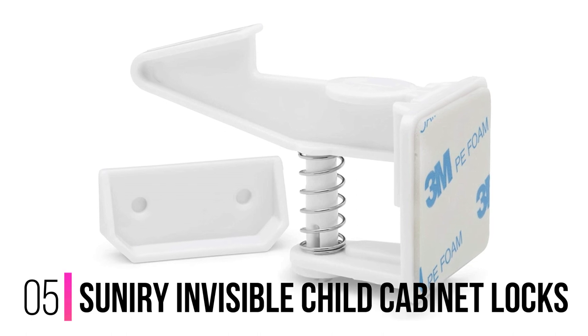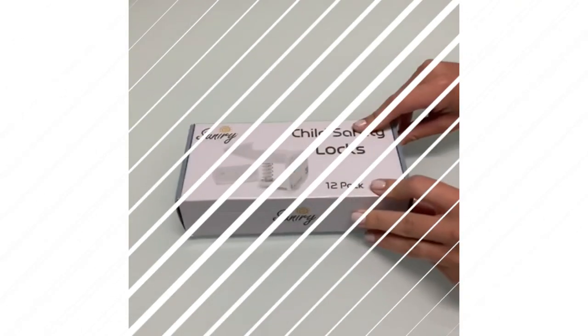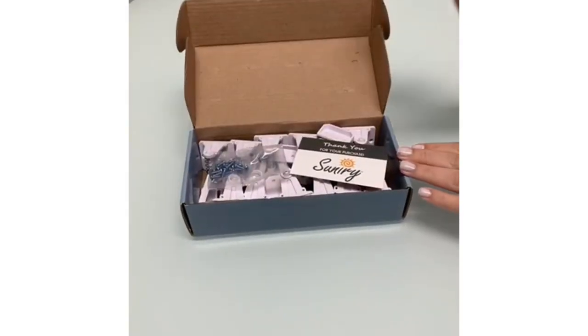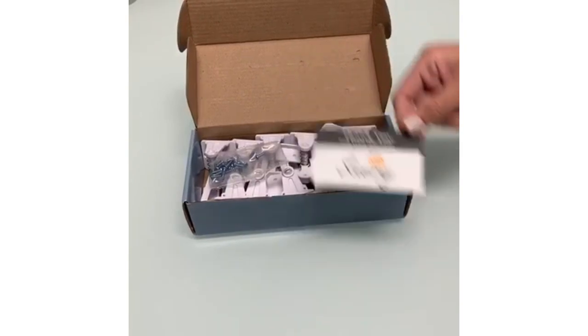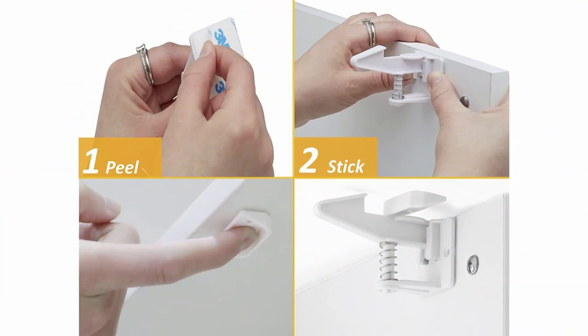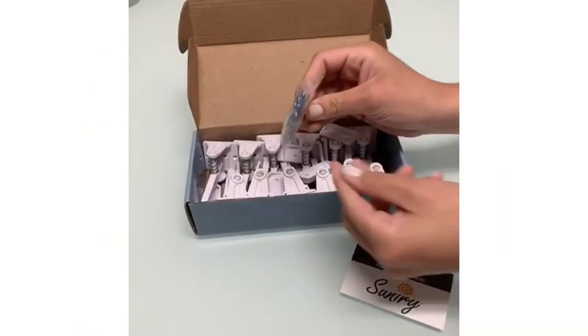Number five: Sun Irie Invisible Child Cabinet Locks. The Sun Irie Invisible Child Cabinet Locks Latching Baby Proofing System is great for parents who have lots of little ones and need cabinets locked for a long time. These latches are a little bit cheaper than other latch systems but might not be as durable if installed with adhesive rather than hardware.